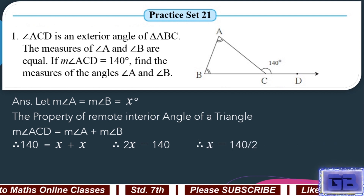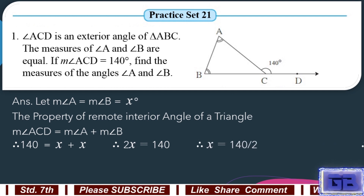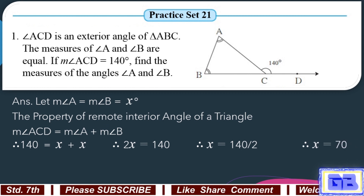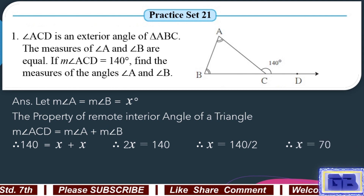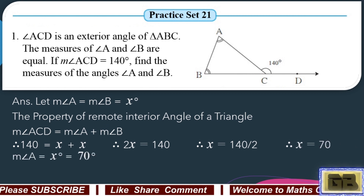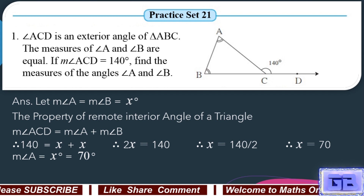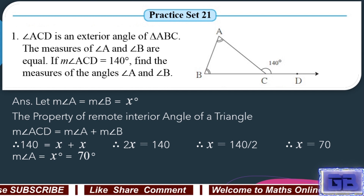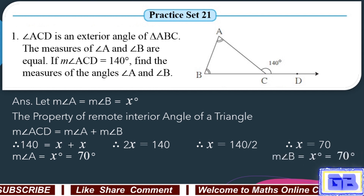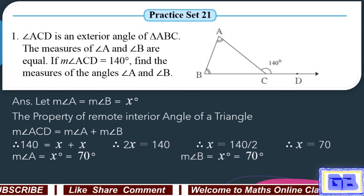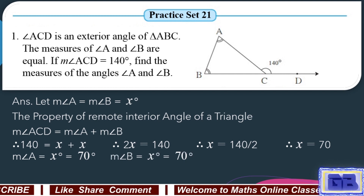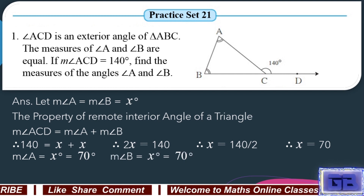Therefore, x equals 140 divided by 2. The measure of angle A equals the measure of angle B equals 70 degrees.